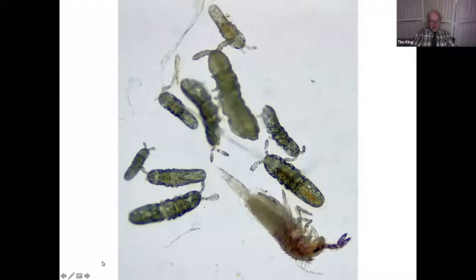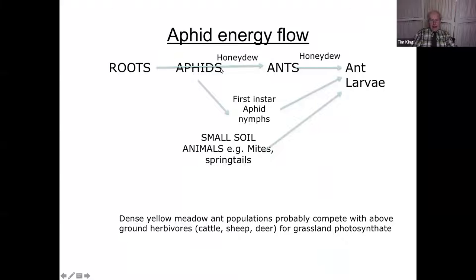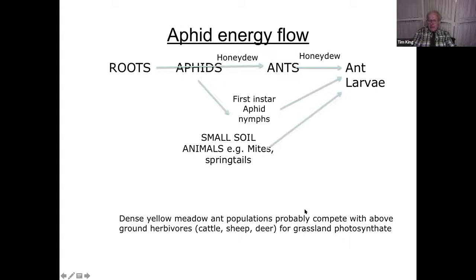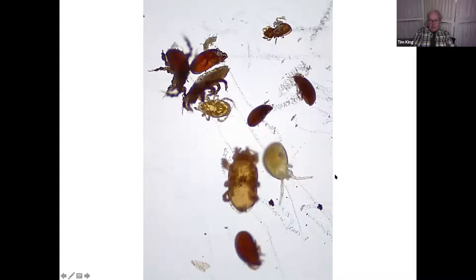What's happening is the ants are acting like primary consumers — taking honeydew, a sugary solution from the phloem of plants, straight to their ant larvae, which are virtually just feeding on a sugar solution plus amino acids. This means they can be very productive. My calculations suggest, just like the realisation of old farmers in 1780, that dense yellow meadow ant populations probably compete with cattle, sheep and deer for grass and photosynthate — where there are plenty of these ants, there's less production for agriculture.